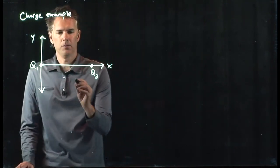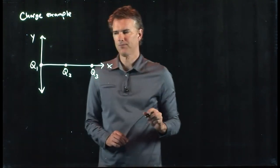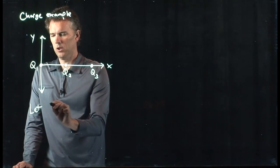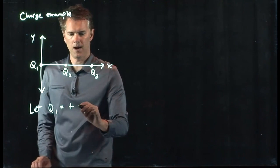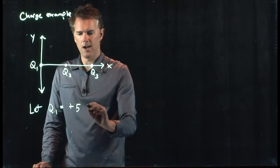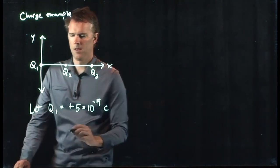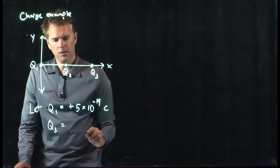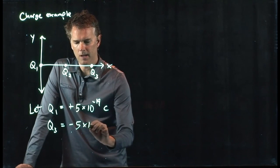And let's put q2 halfway in between. Let's give you some values. Let's say that q1 is positive 5 times 10 to the minus 19 coulombs, and we'll say that q3 is equal to negative 5 times 10 to the minus 19 coulombs.